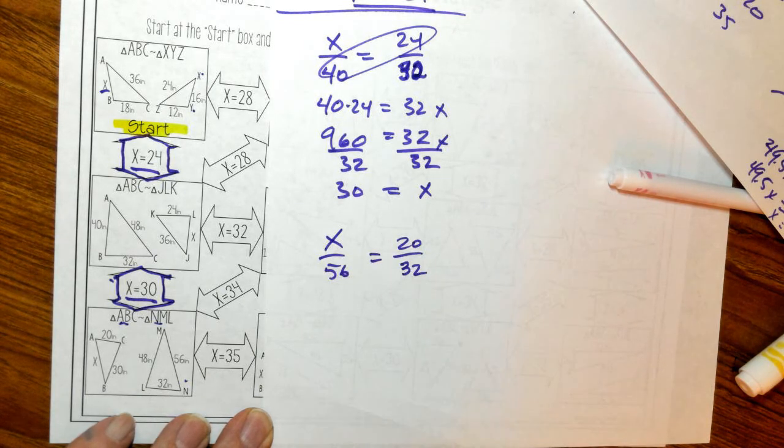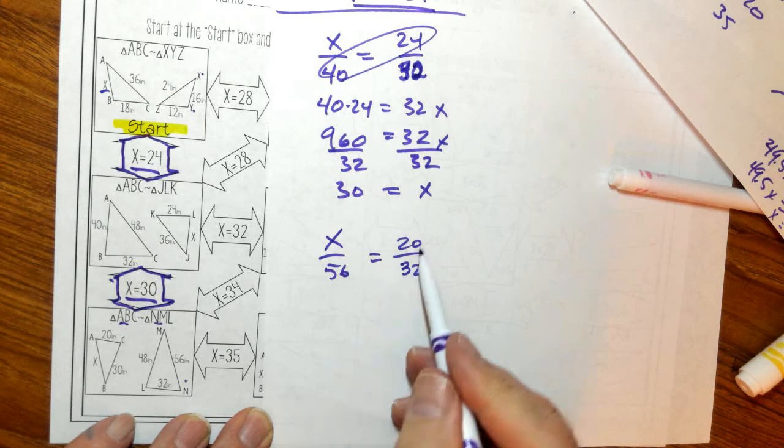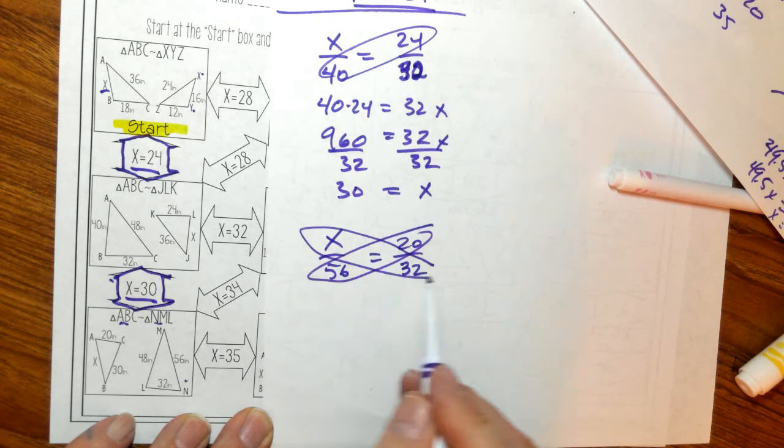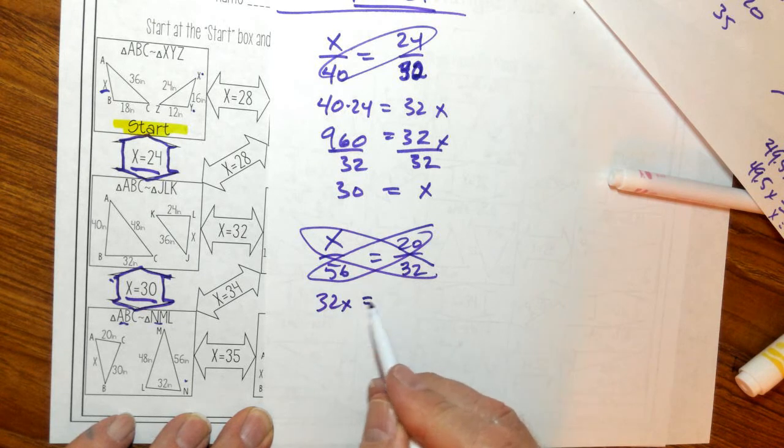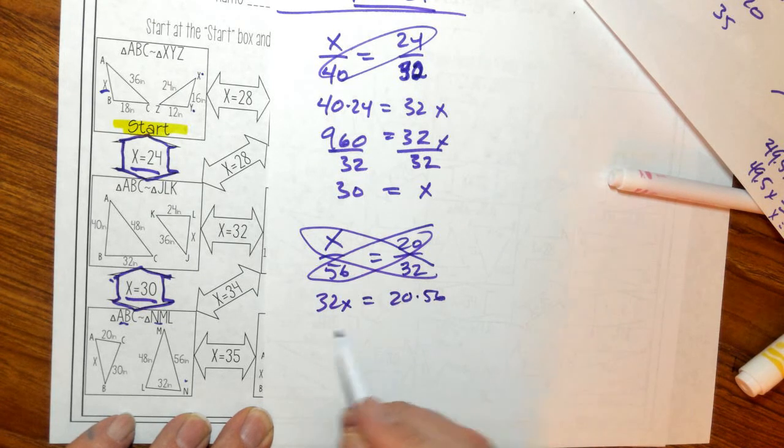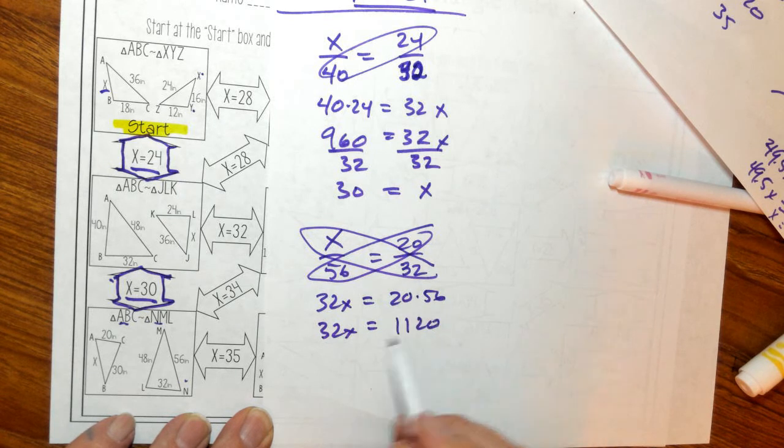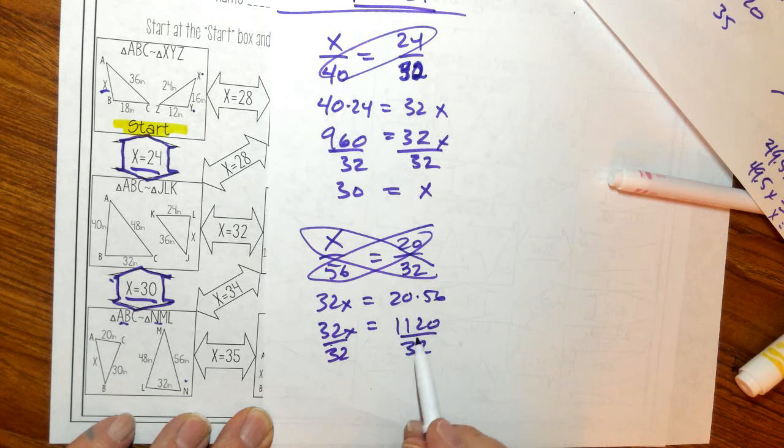And that's my strategy. So it's going to be 20 times 56 and X times 32. So I have 32X equals 20 times 56. So this is 20 times 56 is 1120. And then I'm going to divide by 32. And that's 35.